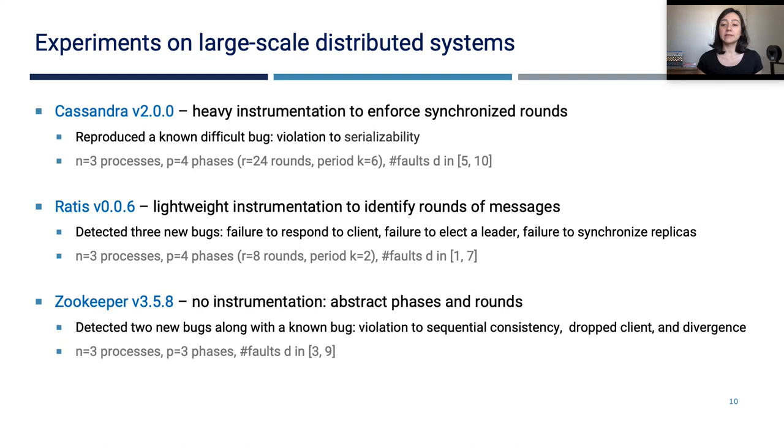In our experiments, we showed that our algorithm can be used to discover new bugs using all three alternatives. For Cassandra, we used our algorithm to reproduce a non-difficult bug which was previously detected by asynchronous sampling algorithms. And we showed here that this asynchronous bug, the bug that exposes itself in an asynchronous execution, can also expose itself in a lossy synchronous execution.